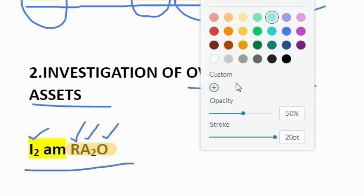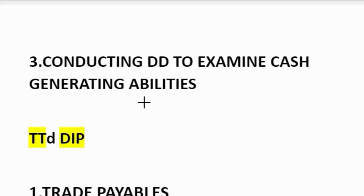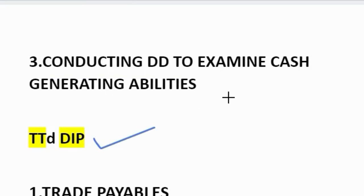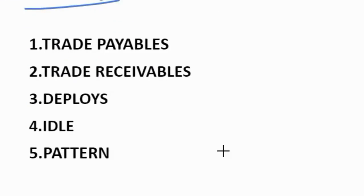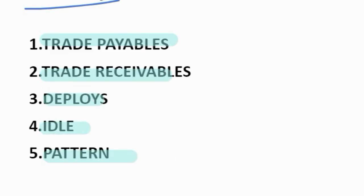Third question: conducting due diligence to examine cash generating abilities. How to remember? TTD DIP. If you go to Tirupati there is a dip facility where if you provide your Aadhaar number you will be selected. So TTD DIP: T stands for trade payables, another T for trade receivables, D for deploys — how will the company deploy its funds, I for idle — are there any funds lying idle or is the company able to reap maximum benefits out of available funds, P for pattern — what is the investment pattern of the company and are they easily realizable. You can find this question in mock test paper of March 2021.